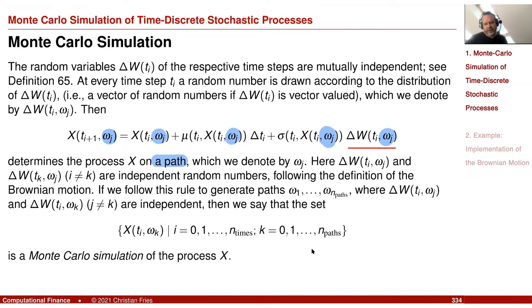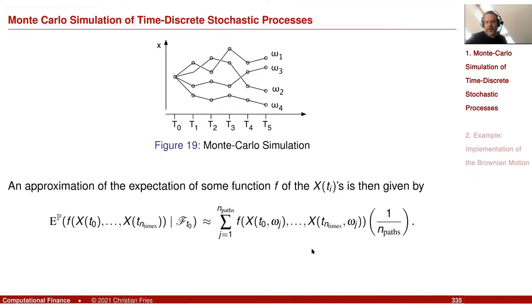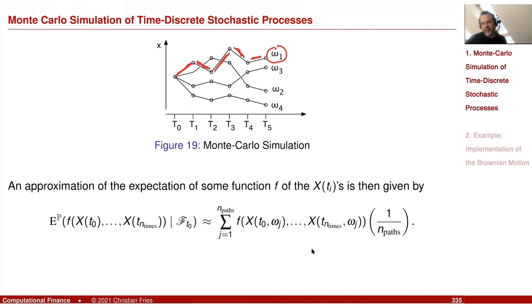We have a very high-dimensional integration. If you have n time steps, we have n dimensions. To approximate the expectation, we just use the Monte Carlo approximation — take the sum over all sample paths. One omega is the sampling of individual random variables. This is Monte Carlo integration in five dimensions, because we have five time steps.